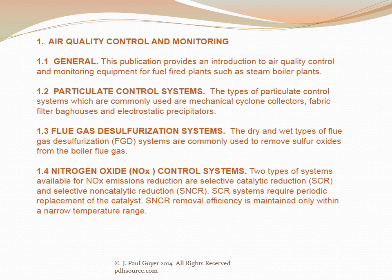Nitrogen oxide, abbreviated NOx, NOx control systems. Two types of systems available for NOx emissions reduction are selective catalytic reduction, abbreviated SCR, and selective non-catalytic reduction, abbreviated SNCR. SCR systems require a periodic replacement of the catalyst. SNCR removal efficiency is maintained only within a narrow temperature range.